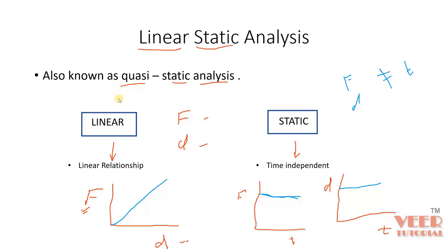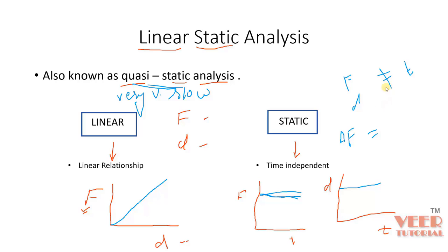Quasi-static analysis means a very, very slow process. In real life, there can be a change in force with respect to time. What the software does is consider that the change in force — delta F — is very close to zero, like 0.001. So the process is very slow, and there is no significant change in the value of force. That is called quasi-static or linear static analysis.